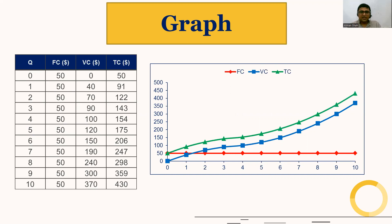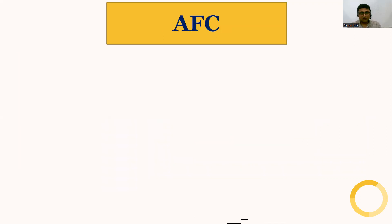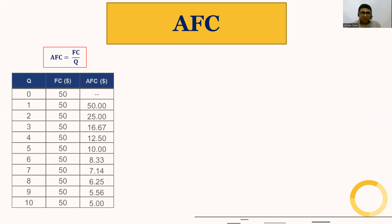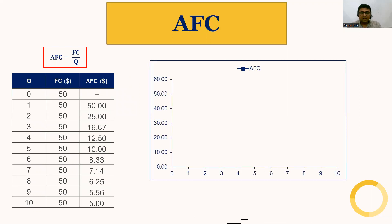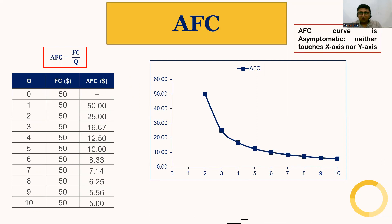What is average fixed cost? If you divide fixed cost by quantity you will get the average fixed cost. See the table — divide fixed cost by quantity to get the average fixed cost column. The average fixed cost curve is downward sloping: as output increases, the average fixed cost declines. The average fixed cost curve is asymptotic, meaning it neither touches the x-axis nor the y-axis.